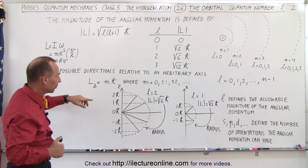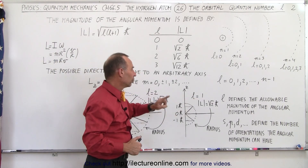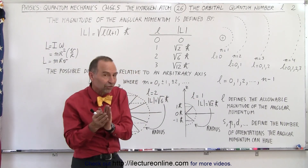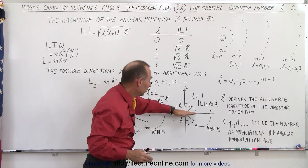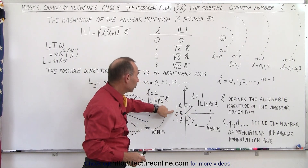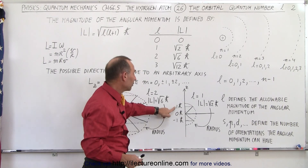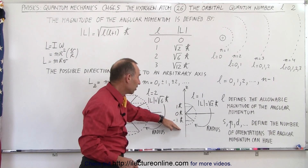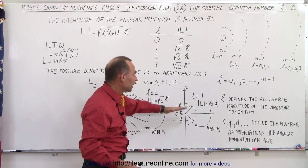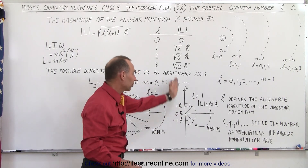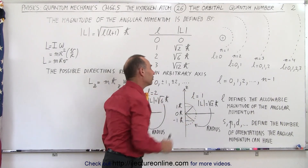When L equals 1, the possible directions the angular momentum can have relative to the z direction are 0 times H-bar, 1 times H-bar, or negative 1 times H-bar. So there are three possible directions for the angular momentum relative to some arbitrary axis.